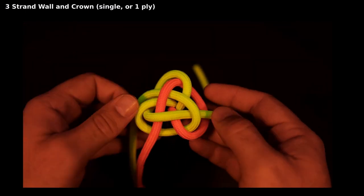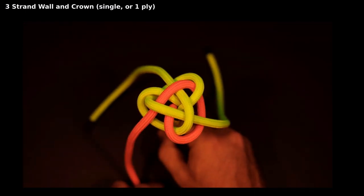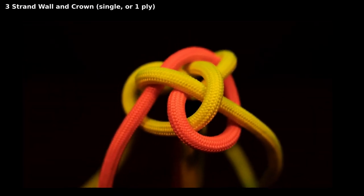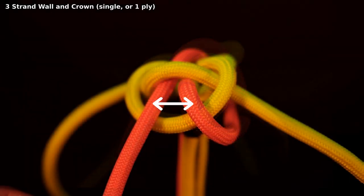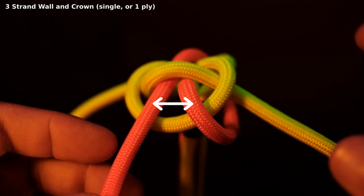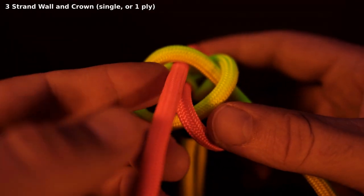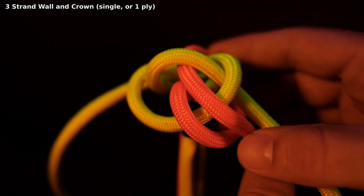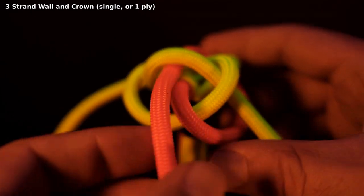Let's loosen the knot a little and double the red strand. We can double the strand by following the adjacent lead. This strand can follow the lead along the top, or on the bottom.